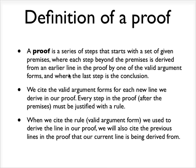So what we do in a proof is we cite one of the valid argument forms for each new line that we derive in our proof, and every step in the proof after the premises must be justified by a rule. So each new line we add to our proof, we have to justify what rule that follows by, and again, the rules are just the eight valid argument forms that I've discussed.